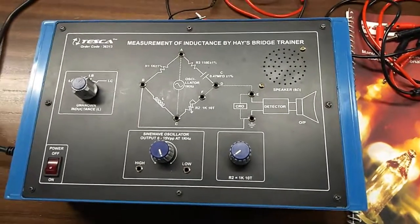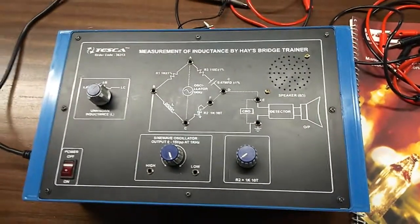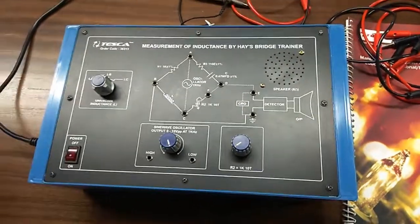Today, we are going to show you our measurement of inductance by Hay's Bridge trainer kit, order code is 36313.